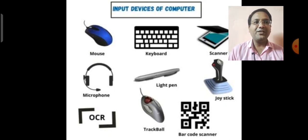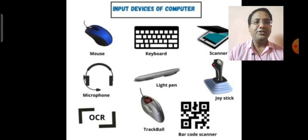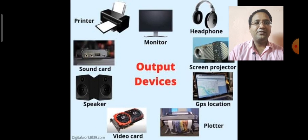Here you can see some images of input devices of a computer like mouse, keyboard, scanner, microphone, light pen, joystick, OCR, trackball, barcode scanner and output devices like printer, monitor, headphone, sound card, speaker, video card, plotter, screen projector and GPS location.